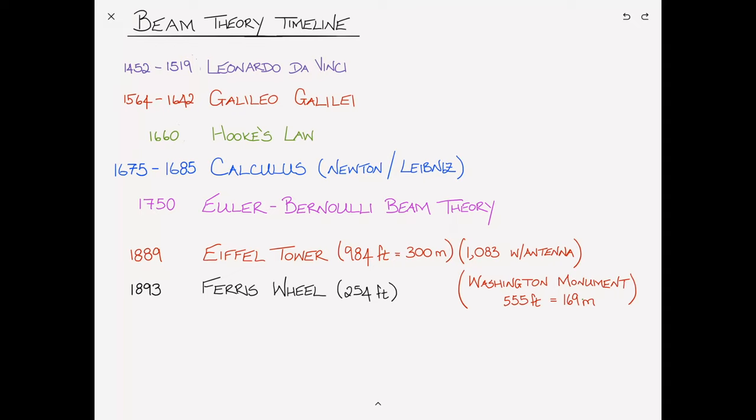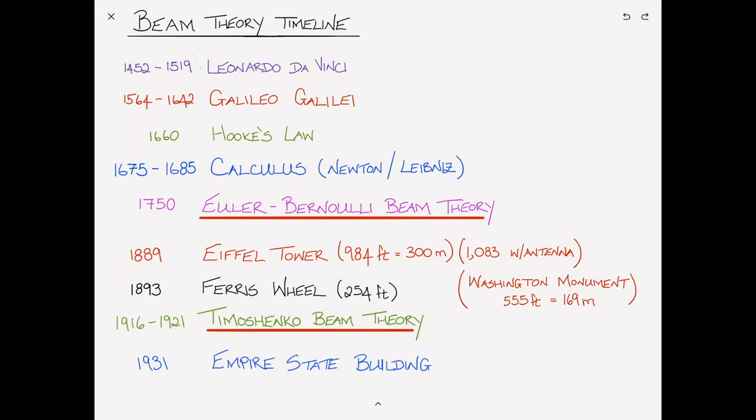Anyway, for about the next 40 years, the Eiffel Tower continued to be the tallest structure in the world. Then, as we mentioned, in 1916 to 1921, Timoshenko published his beam theory. And this was the first time beam theory was advanced since the Euler-Bernoulli theory. And what stole the Eiffel Tower's title as the tallest building in the world? Well, in 1930, the Chrysler Building in New York was opened, and that was slightly taller than the Eiffel Tower. Although then the Eiffel Tower added an antenna, and briefly it once again became the tallest structure in the world. This until the following year, when in 1931, the Empire State Building in New York was opened.